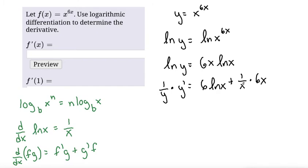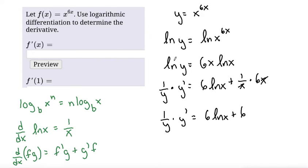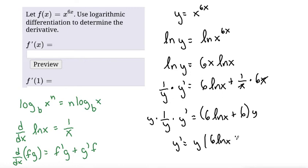Simplifying: the x on the bottom cancels with the x on top, leaving us with 1 over y times y prime equals 6 ln(x) plus 6. From here we want to solve for y prime, so multiplying by y on both sides, we get y prime equals y times (6 ln x + 6).